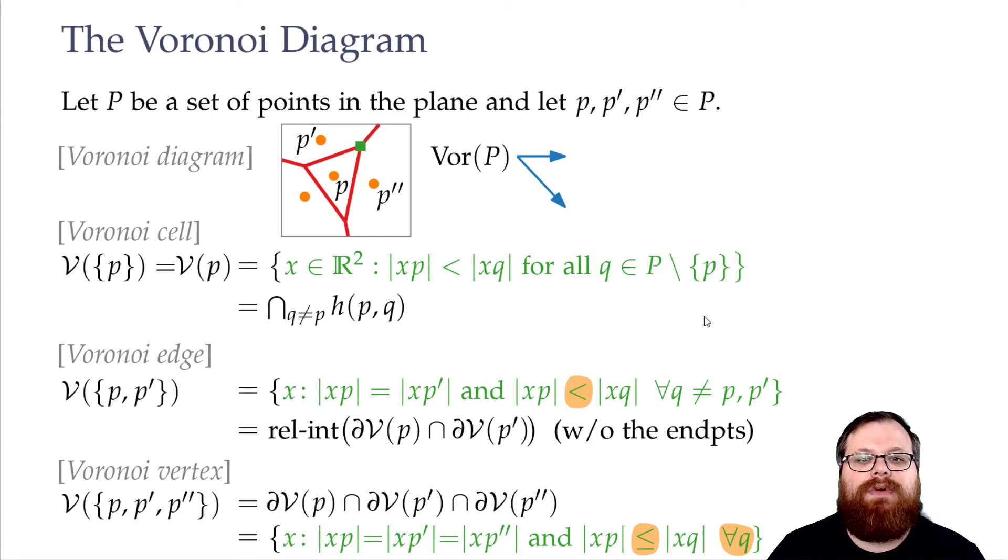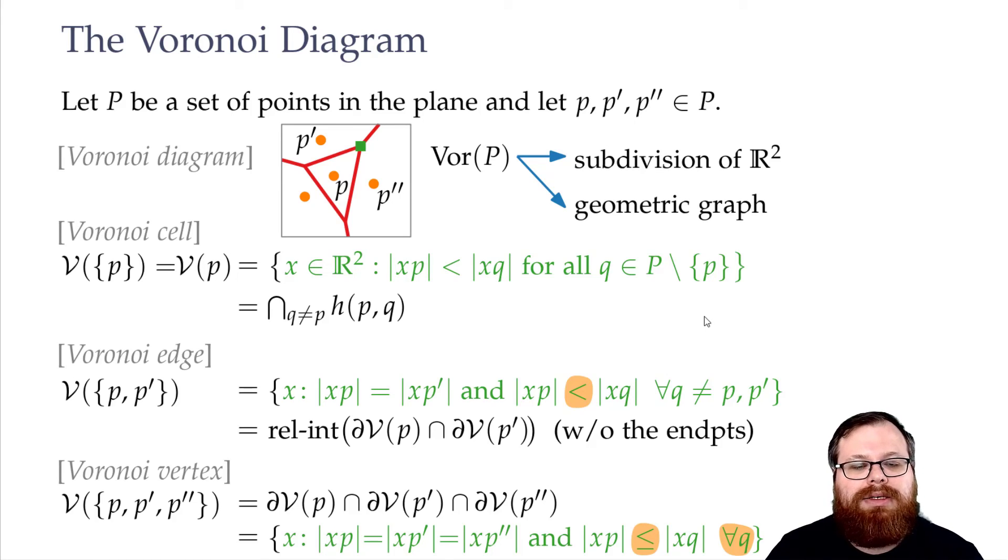So the Voronoi diagram of P is a subdivision of the plane and also a geometric graph. These vertices and edges describe a geometric graph for us. The cells are then just the faces defined by the boundaries implied by the vertices and edges.